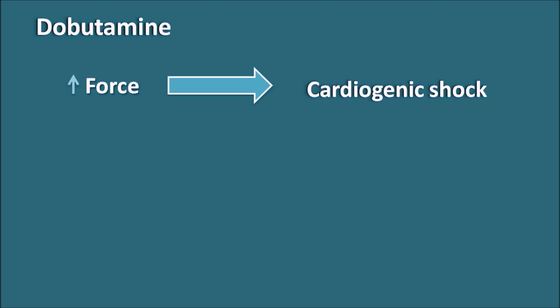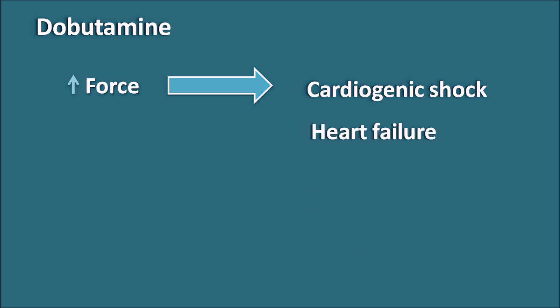Cardiogenic shock is a condition where the heart is not responding properly. In such an emergency situation, Dobutamine injection can be given to increase the force of contraction of the heart. Dobutamine can also be used in the treatment of heart failure where there is decreased cardiac output, whenever all other treatments are not working.